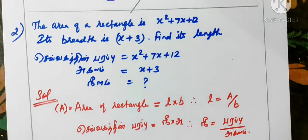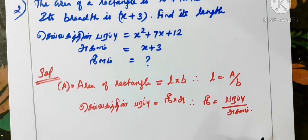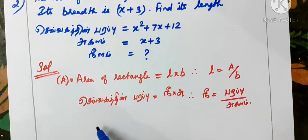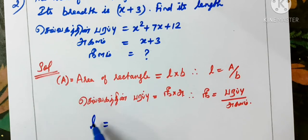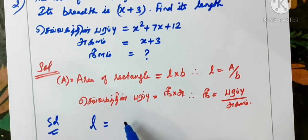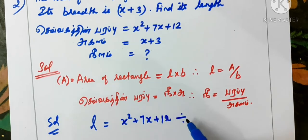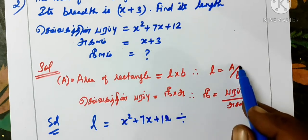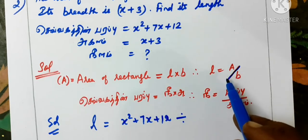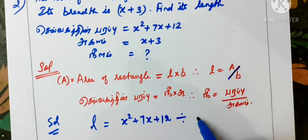So we need to find L. Therefore, L is equal to — we put our solution: x square plus 7x plus 12, divided by x plus 3.